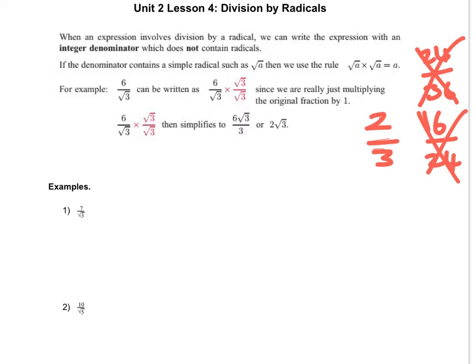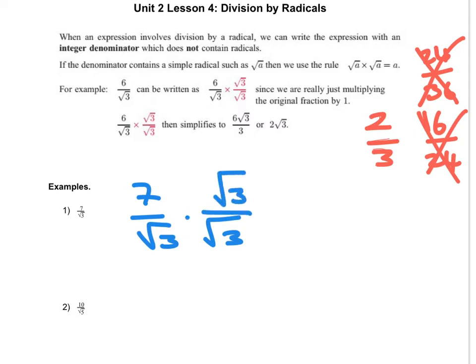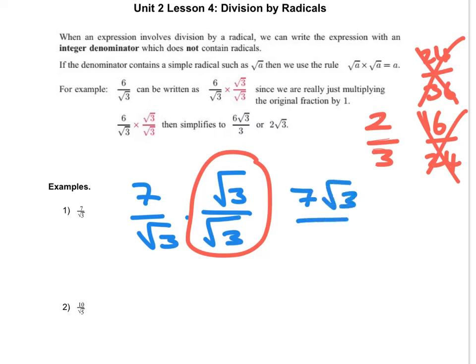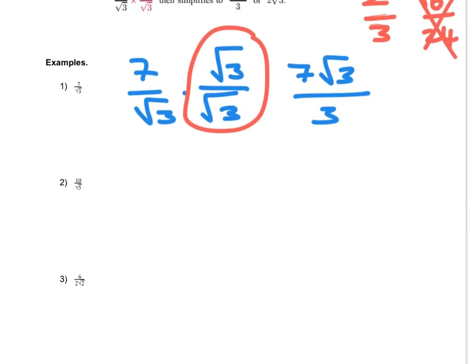We can use that to our advantage here. I'm going to write it a bit bigger — it's 7 over root 3. The problem is we don't want root 3 on the bottom. To get rid of it, we multiply the bottom by root 3, because root 3 times root 3 gives you 3. But because we're doing it to the bottom, we have to do it to the top as well. So we get 7 root 3 on top, and root 3 times root 3 is 3 on the bottom. There's your answer.